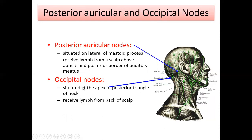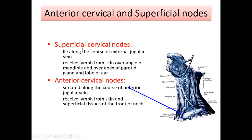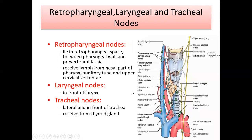The occipital group of lymph nodes is situated at the apex of the posterior triangle of the neck and receives lymph from the back of the scalp. The superficial cervical node lies along the course of the external jugular vein and receives lymph from the skin over the angle of the mandible, over the apex of the parotid gland, and the lobe of the ear. The anterior cervical node is situated along the course of the anterior jugular vein and receives lymph from the skin and superficial tissue of the front of the neck.